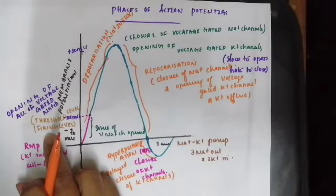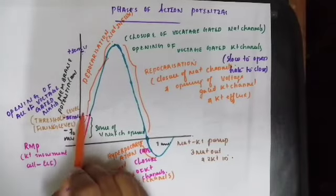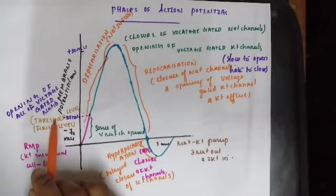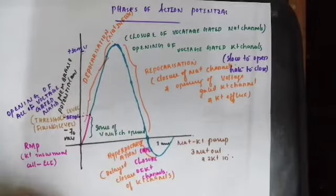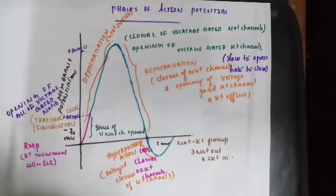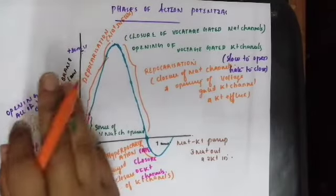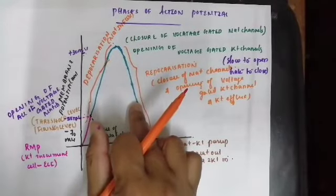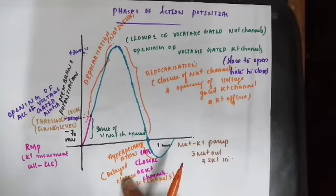An action potential is produced once a stimulus of threshold level or firing level — minus 55 millivolt — is applied to the neuron. Action potential consists of: a depolarization phase due to sodium influx; a repolarization phase due to closure of sodium channels and opening of potassium channels with potassium efflux; and a hyperpolarization phase due to delayed closure of potassium channels and continued potassium efflux out of the cell.